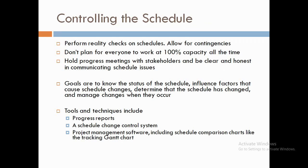The last process is controlling the schedule, which is done by performing reality checks, not expecting everyone to work at full potential all the time, holding progress meetings with stakeholders, and being honest about issues in project duration and scheduling. The goal is to find out the current progress, status, and any changes in the decided schedule. For this, progress reports, a change control system, and Gantt charts are used.